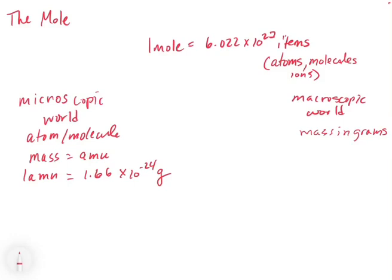When you walk up to a balance in a lab for your first experiment, your balance is going to read out in grams and you're going to weigh out something like 2 grams. Because one atom or molecule is 1.66 times 10 to the minus 24 grams, we're going to need a lot of those atoms or molecules to get up to a mass in grams — a tremendous number to get from one all the way up to what we can actually weigh on a balance. That's the reason why the mole is so large.